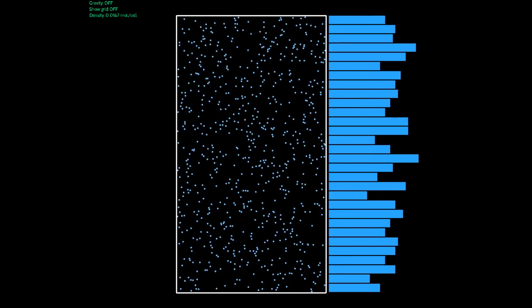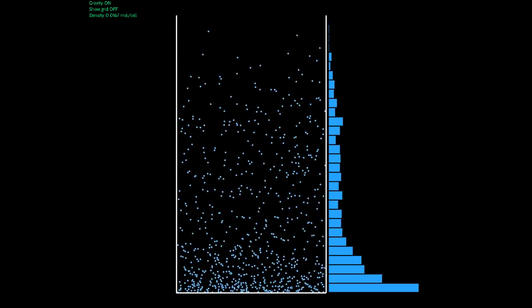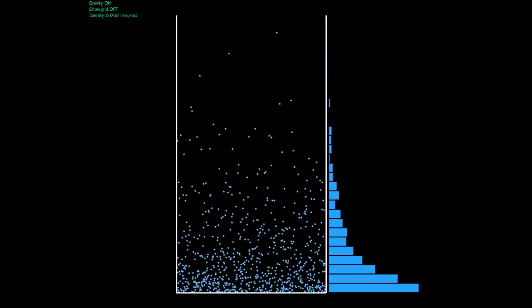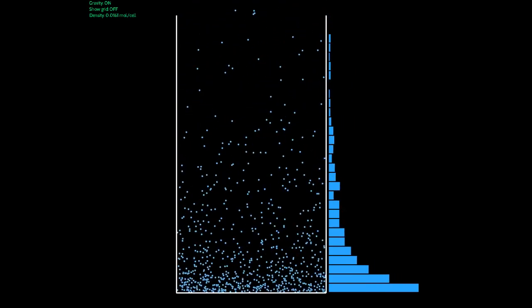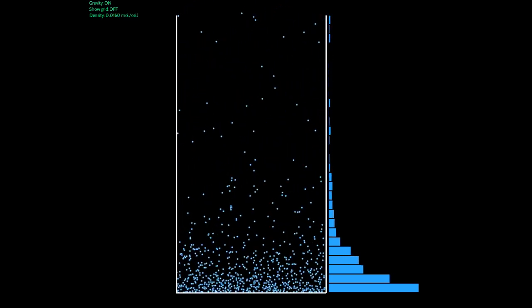Now let's do that again except this time we enable gravity. Notice that almost immediately the particle distribution is a decaying exponential with height, which is exactly what we see in the atmosphere. And we don't need an upper wall to contain it.